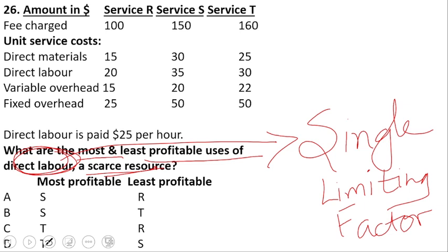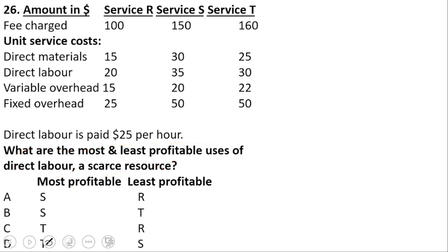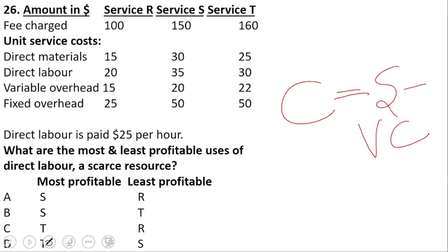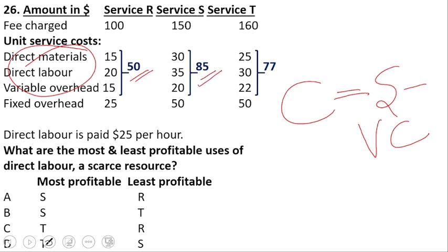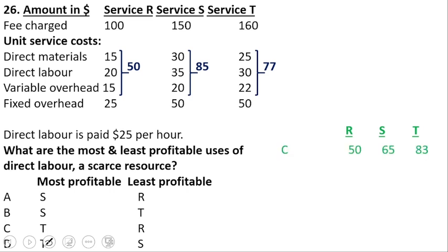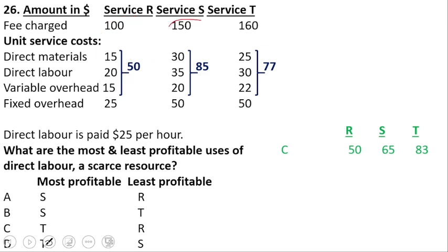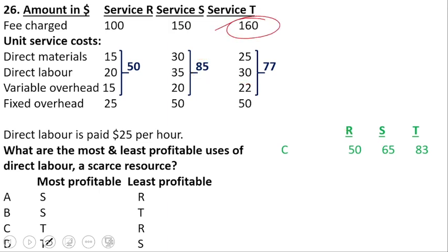To establish which is the most profitable product, we calculate contribution per labor hour since direct labor is limited. First, calculate contribution: contribution equals sales minus variable costs. There are three variable costs to total — these come to $50 for R, $85 for S, and $77 for T. Contribution for R is $100 minus $50 = $50; for S it is $150 minus $85 = $65; and for T it is $160 minus $77 = $83.